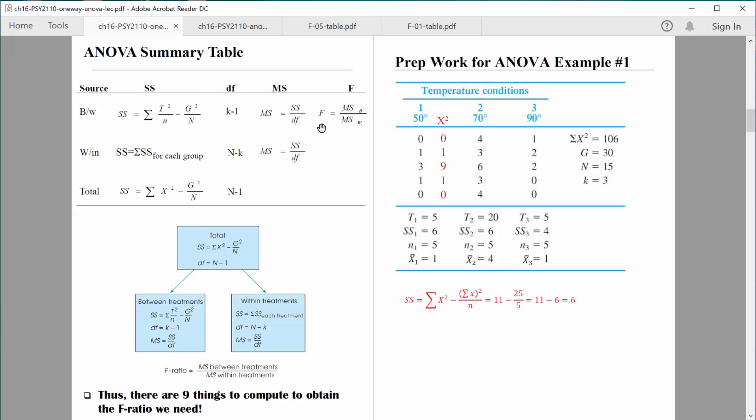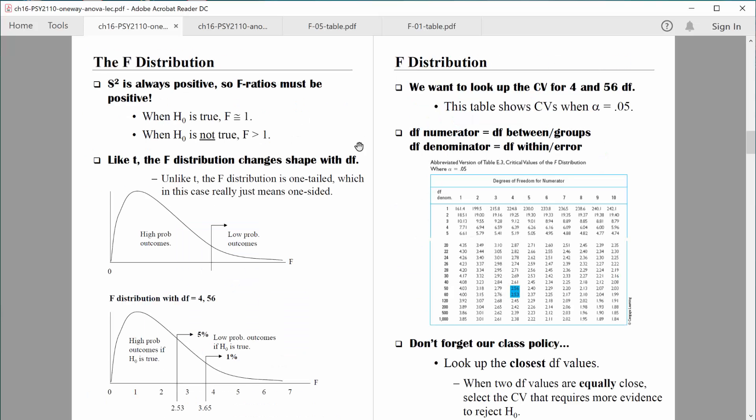So look at the F ratio. Keep in mind it's comprised of mean square between over mean square within. In other words, variance between groups over variance within groups. The reason why I'm trying to make that clear is I want to make sure you remember that variance, that's s squared, is always positive. So if variance between groups is always positive and variance within groups is always positive, then the F ratio must always be positive.